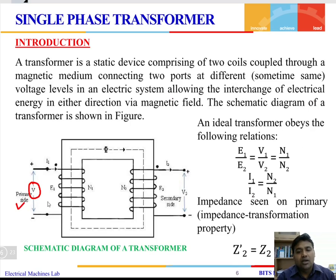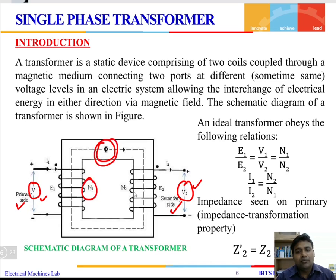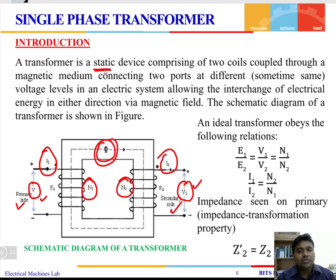The side to which the supply is applied is the primary side and the side where the load is applied is the secondary side. Primary side is represented by V1 and V2 is the secondary voltage. The flux is established in the core. N1 and N2 are the number of turns in the primary and secondary winding, while I1 and I2 are the currents drawn by each. The transformer is a static piece of apparatus, so there are no rotating parts and no rotational losses.